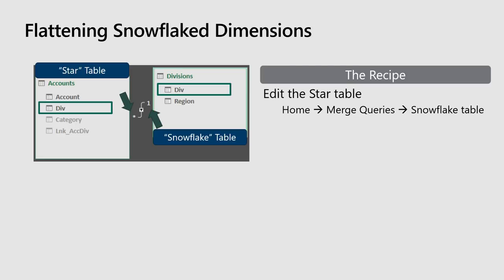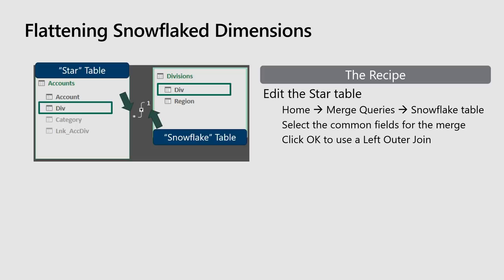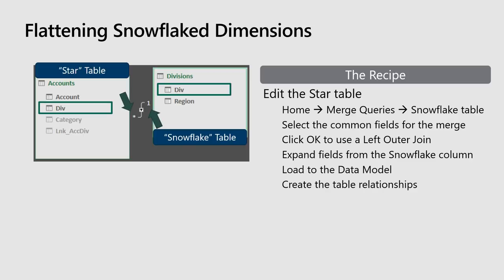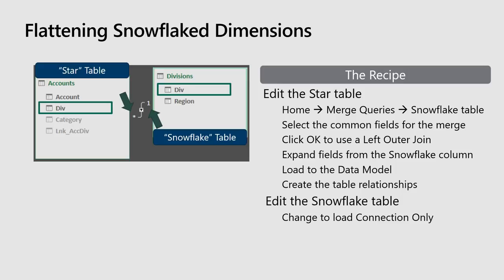We'll go to Home, Merge Queries, and merge it to the snowflake table. We'll select the common fields for the merge — in this case division, which is what we use to relate these two tables. Then we click OK to use the left outer join, which is the default. That will find all related records in the division table. We already know this is a one-to-many relationship so it's never going to bring back the wrong thing. I can then expand the fields from the snowflake table — in this case, the only field I need is region. That gives me a table that has account, division, and region all in one table. I'll load that to the data model, create my relationships, and then edit my snowflake table to change it to connection-only and remove it from the data model altogether.